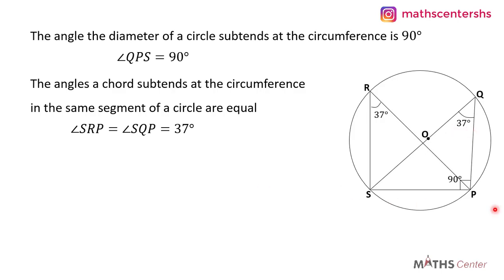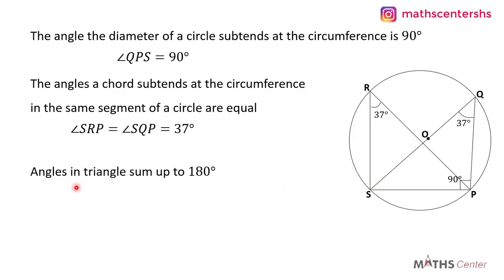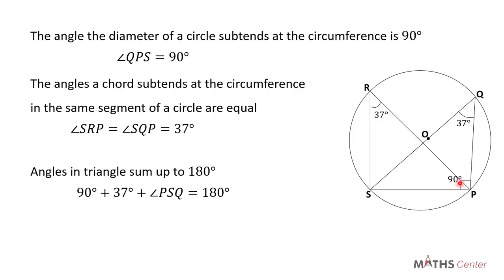If we consider the triangle PSK, we can see that the angle formed at point S, the angle formed at point K, and the angle formed at point P form the interior angles of the triangle. From mensuration, we know that the angles in a triangle sum up to 180 degrees. So 90 degrees plus 37 degrees plus the angle PSK, which we are looking for, is equal to 180 degrees.